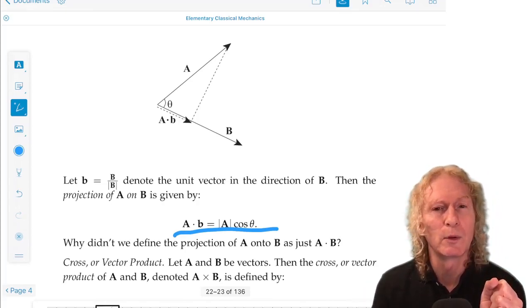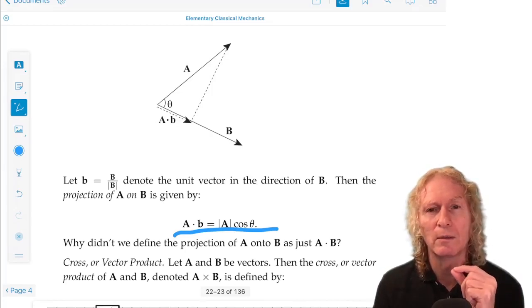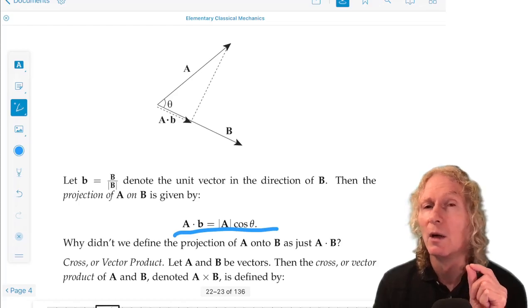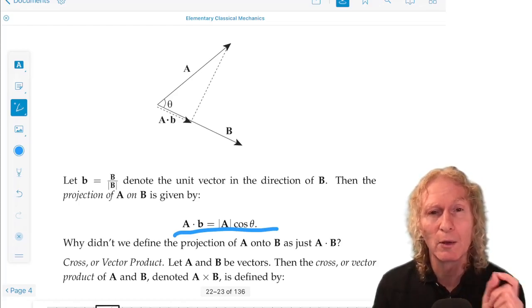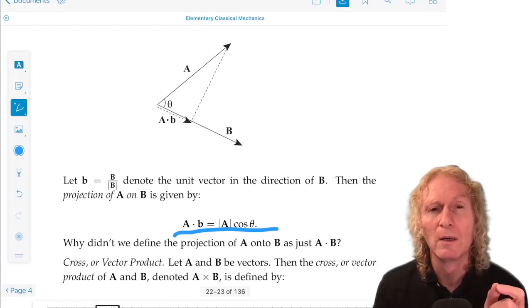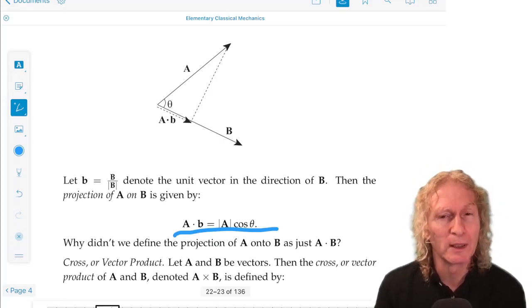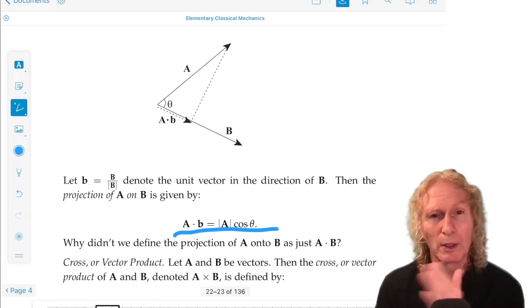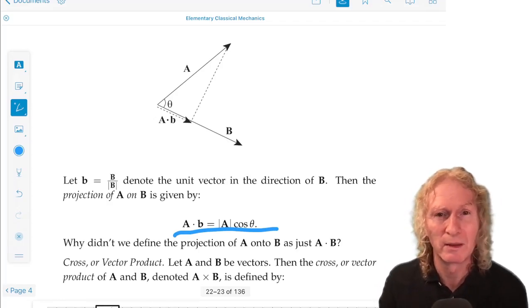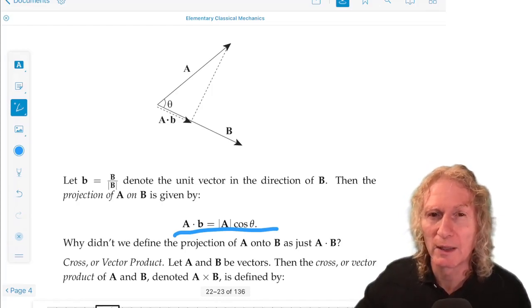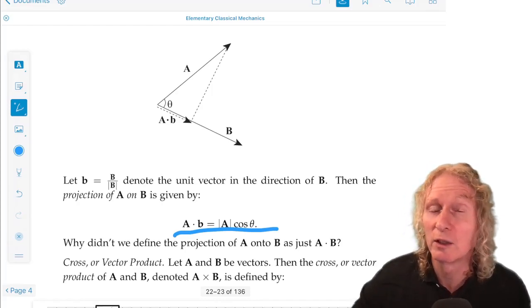Now, often people say, well, why do you make b a unit vector? Why don't you just take a dot b? Well, when we talk about the projection of a onto b, we just want the amount of a in the direction of b. And if b kept getting bigger or smaller, that would get larger and smaller, and that would not capture the idea of the amount of a in the direction of b.